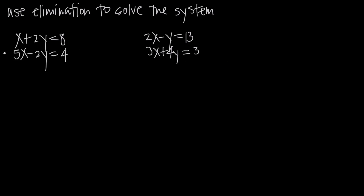We want to use addition here. When we add the equations together, we get x plus 5x, which gives us 6x. Positive 2y plus negative 2y is 0, so those two cancel. And then 8 plus 4 is 12. Notice how we've eliminated the y variable, leaving us with only the x variable.